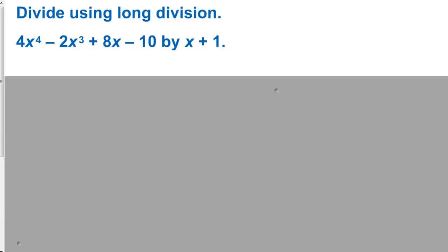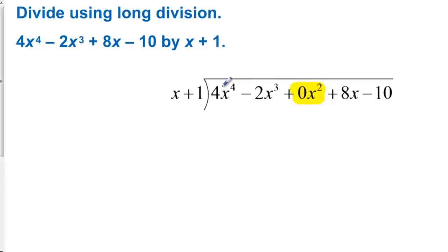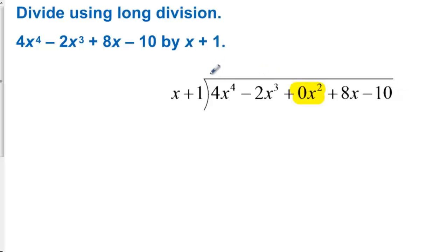Divide using long division. When we have a power missing, we represent that power with a 0. We have x to the fourth, x to the third, x, and then the constant. What's missing is the x squared. When you divide using long division, you want to represent all of the powers starting with the highest one on down — so we have 4, 3, 2, 1, and then a power of 0, which is the constant.